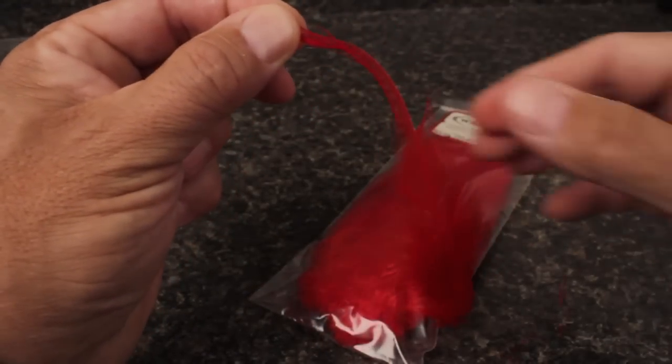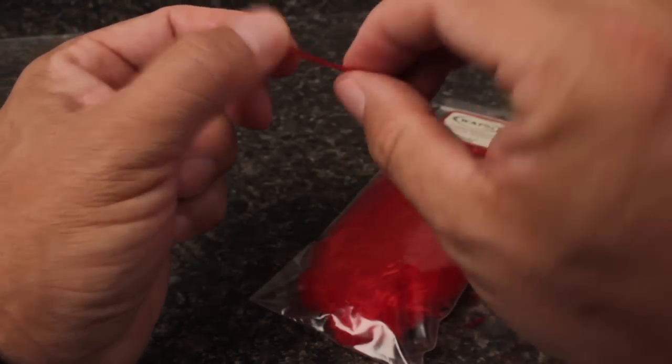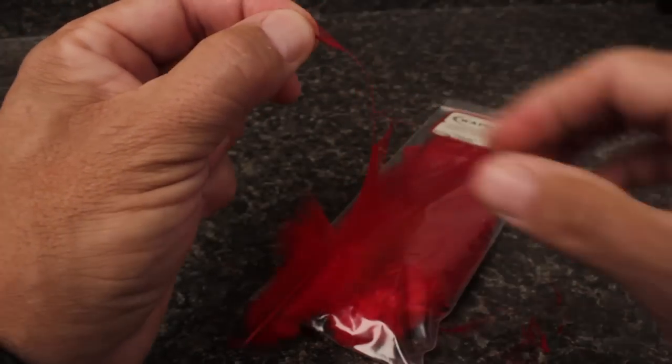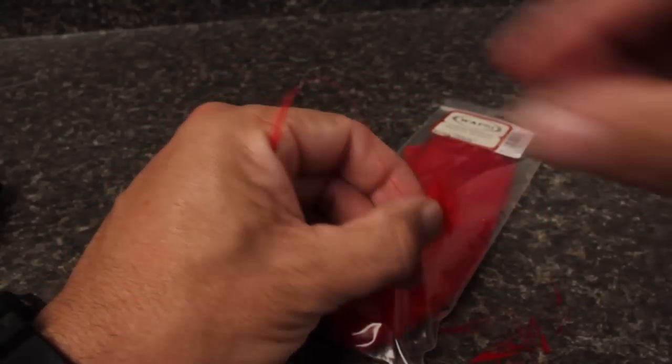Although many other materials will work for the body of the fly, a strip saddle hackle is one of my favorites. Leave a few fibers at the butt and tip for easier handling.